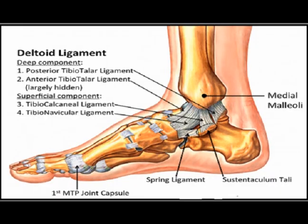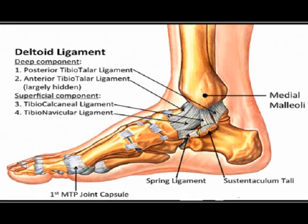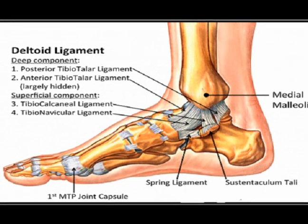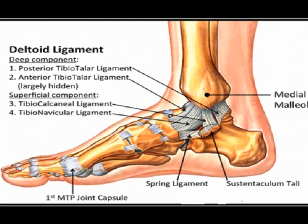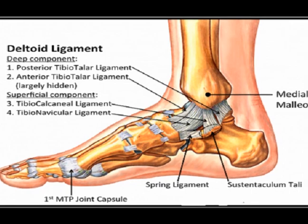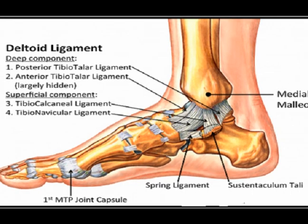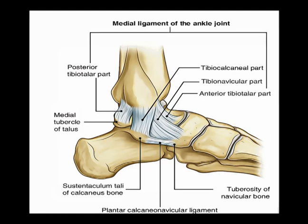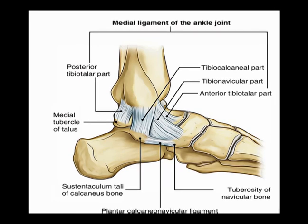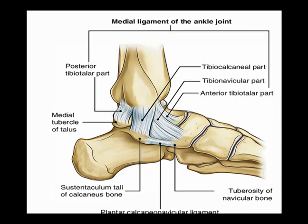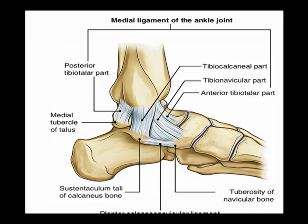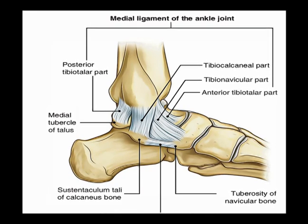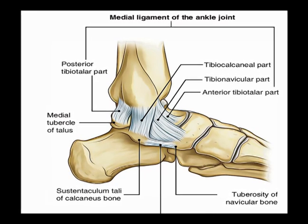The four ligaments are: the posterior tibial talar ligament, the tibial calcaneal ligament, the tibial navicular ligament, and the anterior tibial talar ligament. So there are four ligaments but two of them connect to the talus bone in the foot — the posterior tibial talar ligament and the anterior tibial talar ligament.